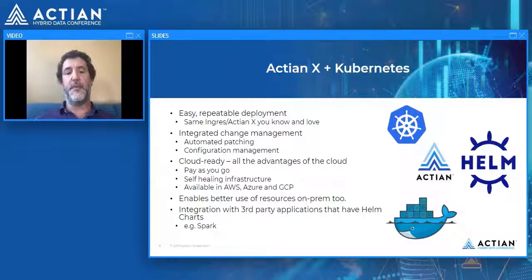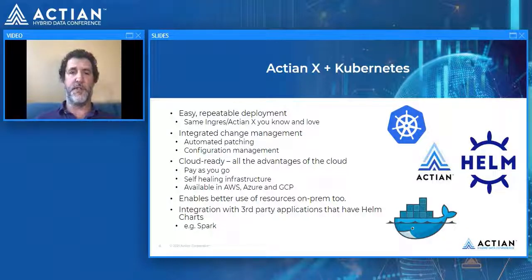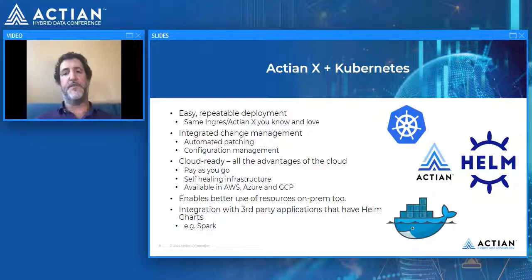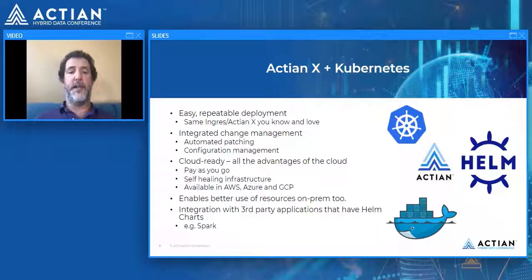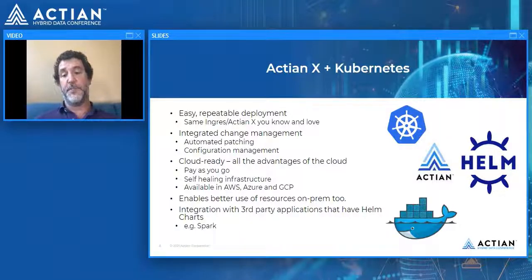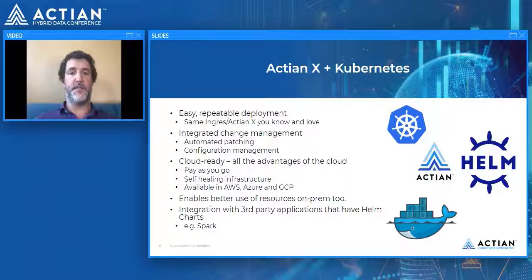Similarly, on-premises it gives you a much more efficient use of underlying resources. Once Kubernetes is deployed across a hardware infrastructure, pods can be moved around where resources are, allowing you to maximize what you have. With Helm charts, many third-party applications already have charts available, making integration much easier — in particular Spark. Both ActianX and Vector have a Spark provider plugin, and deploying the Spark cluster can be greatly simplified just by using a Helm chart.